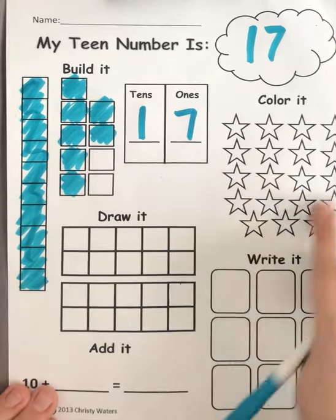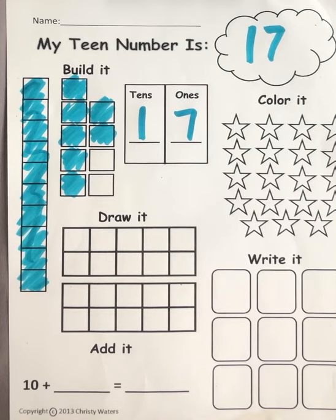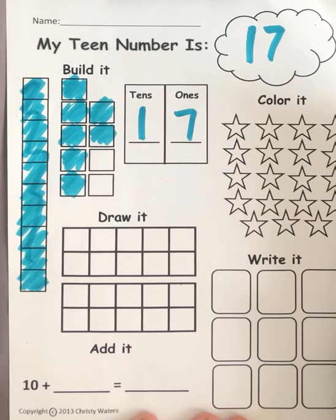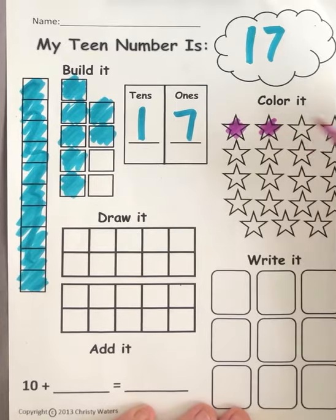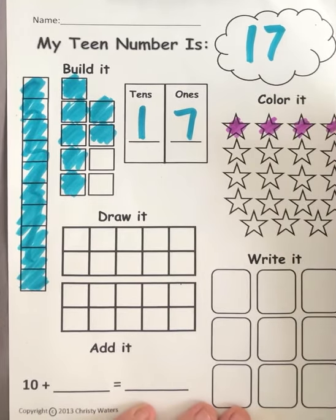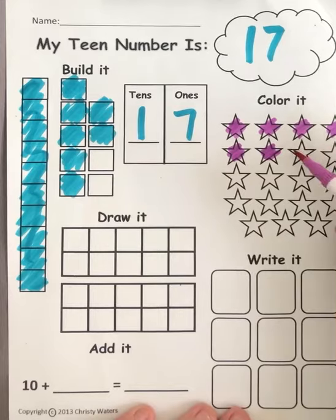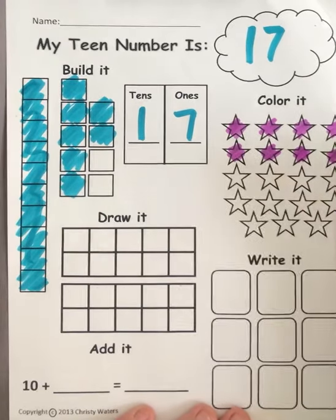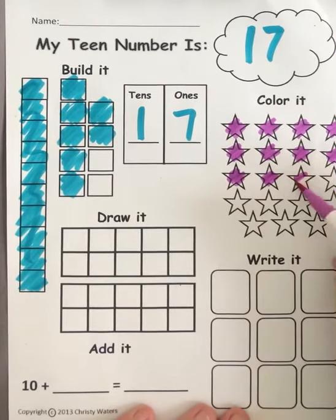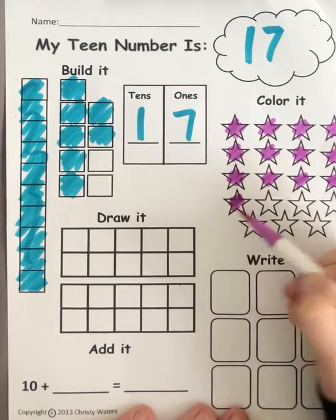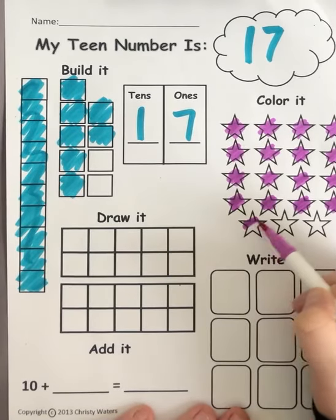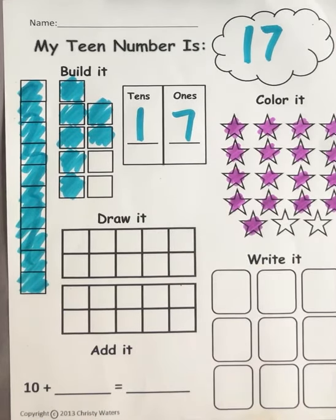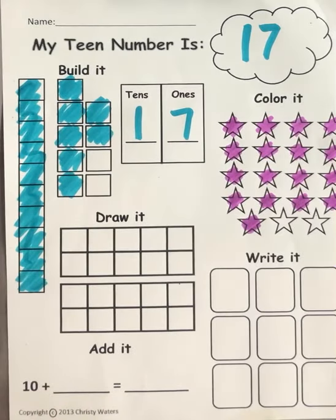Now we're going to go ahead and color in our stars. I'm going to make my paper a little more fun by using a different color. I need 17 again, so will you help me count? One, two, three, four, five, six, seven, eight, nine, 10, 11, 12, 13, 14, 15, 16, 17. Oh my goodness, I almost counted them all. There are 17 stars.